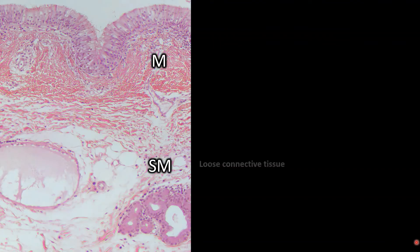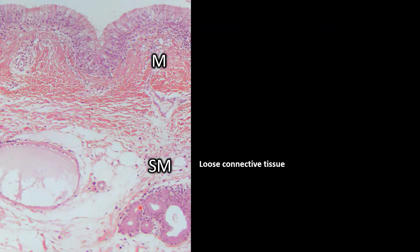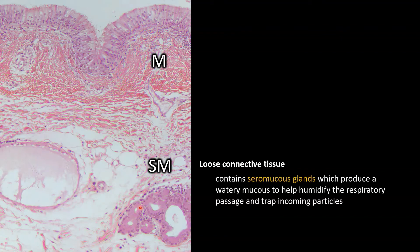Zooming in on the mucosa and submucosa: the submucosa is a loose connective tissue, and in this loose connective tissue you have a bunch of seromucous glands. Glands are made of cuboidal tissue, so any little cheerios made of cuboidal tissue in the submucosa are the seromucous glands. Those glands produce a watery mucus — the watery part humidifies your airway, while the mucusy part helps trap particles, debris, dust, pollen, bacteria, and whatever else you're breathing in.